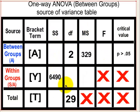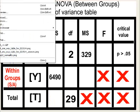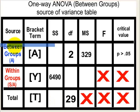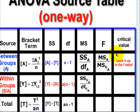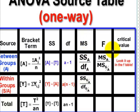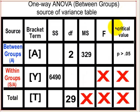Now, the mean squares, according to our ANOVA table, is the sum of squares divided by the degrees of freedom. So that's how you get this column — you take the sum of squares column divided by the degrees of freedom column, and that gives you your mean squares column. Let's go ahead and do that.